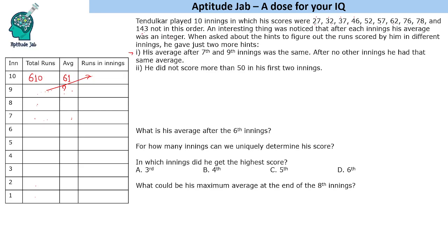The divisibility rule for 9 using digit sums is the easiest approach. The digit sum of 610 is 7, so the 10th innings score should have a digit sum such that the 9-innings total has digit sum 9 (i.e., divisible by 9). This means the 10th innings score must have a digit sum of 7. This digit sum approach will help reduce the cases drastically instead of doing hit-and-trial through 10 calculations.